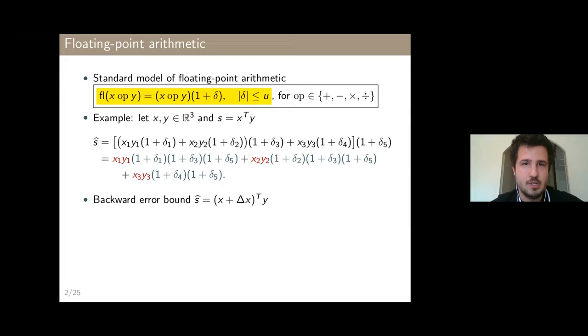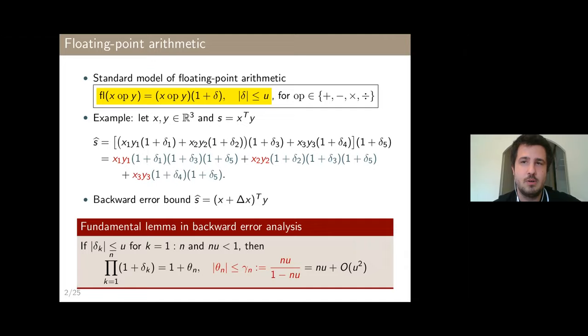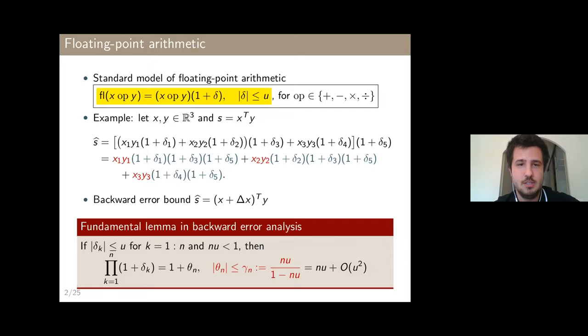If we're interested in bounding the size of this perturbation delta x, we need to determine how big the products in blue can get. We have an expression of the form: product of (1 + delta_k) terms. To do this, we use a very fundamental lemma in backward error analysis, which bounds by how much the product of n terms of the form (1 + delta), where delta is bounded by u, can deviate from 1. The lemma says it cannot deviate from 1 by more than gamma_n. Delta x is therefore bounded by gamma_3.